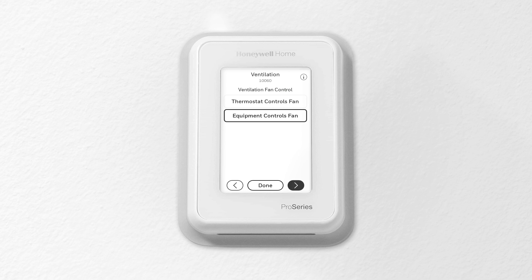If the T10 Plus is used on a single zone application, do not wire the ventilator to the R and G on the furnace board and instead set ISU 10060 to thermostat controls fan.